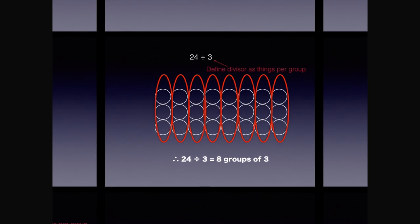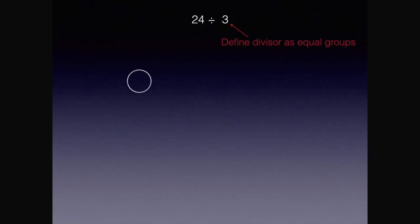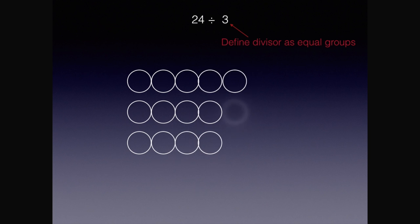The second way we'll show this problem is defining our divisor as the number of groups we want to make. That means we'll take 24 things and divide them into 3 equal groups. First, put 3 counters in 3 separate groups. Keep adding counters equally amongst each group until you run out of counters.